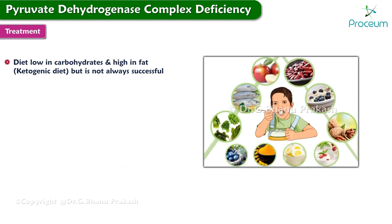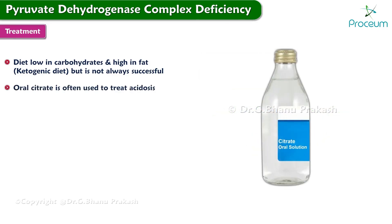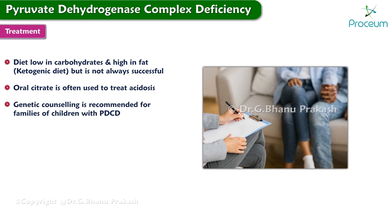A diet low in carbohydrates and high in fat, also known as a ketogenic diet, has been used to treat the symptoms of PDCD, but it is not always successful. Oral citrate is often used to treat acidosis. Genetic counseling is recommended for families of children with pyruvate dehydrogenase complex deficiency.